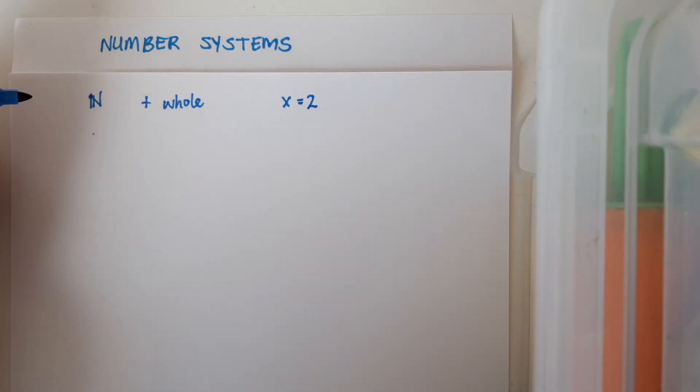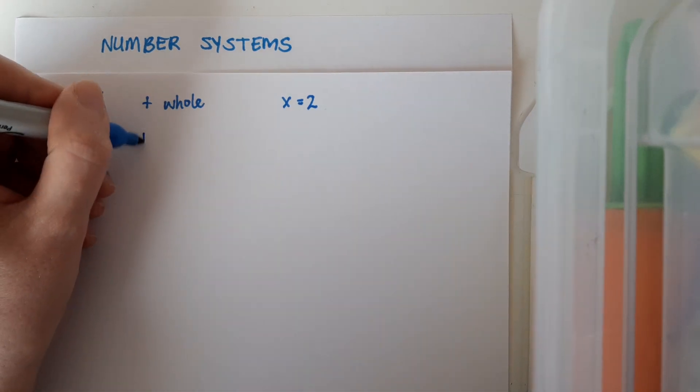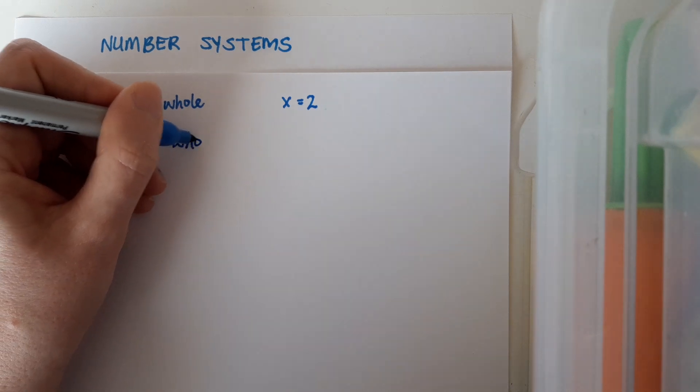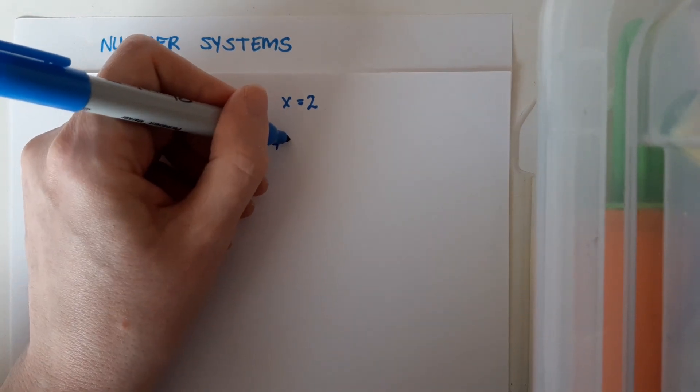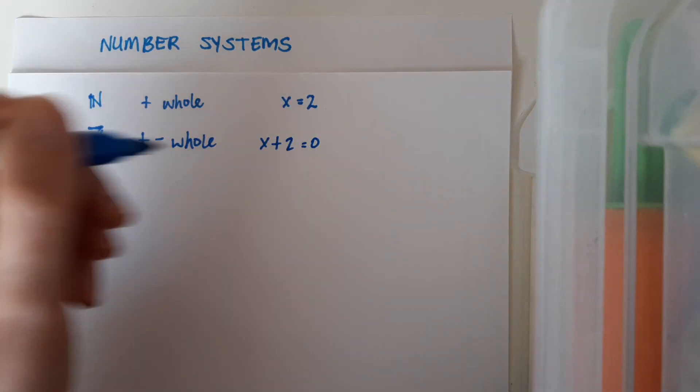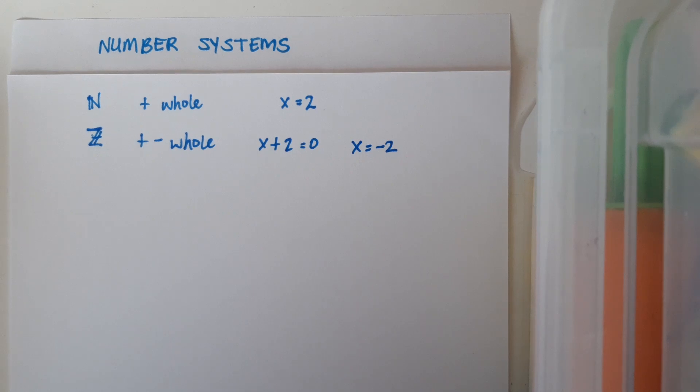But not every linear equation has a positive whole number solution, so we need to expand into the integers, which are positive and negative whole numbers, which could do the job of solving something like x plus 2 equals 0. So I can get a negative whole number answer for that, minus 2 is an element of the integer set.